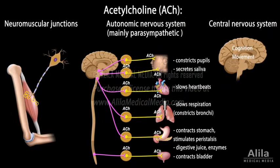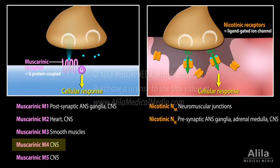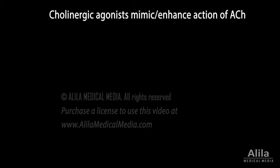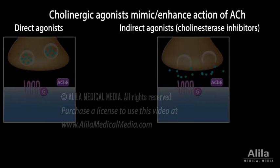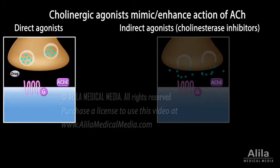Because the action of acetylcholine is widespread, cholinergic drugs may produce many side effects when administered systemically. Drugs that target a particular receptor class are more specific and are therefore preferred. Cholinergic agonists can be direct acting or indirect acting. Direct acting agonists mimic acetylcholine — they bind to acetylcholine receptors and activate downstream signaling. They are not easily metabolized by acetylcholinesterase and therefore last longer at the synapse.